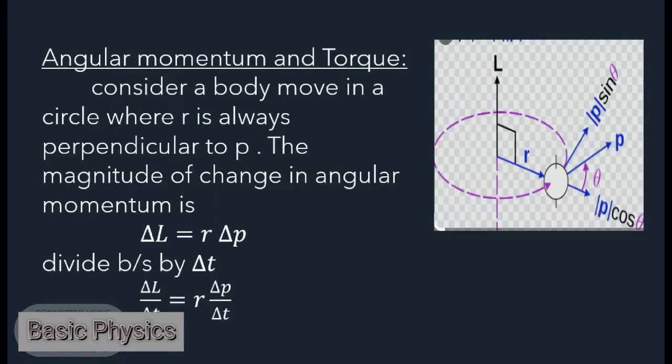Dividing both sides by delta t, we get delta L by delta t equals r delta p by delta t.